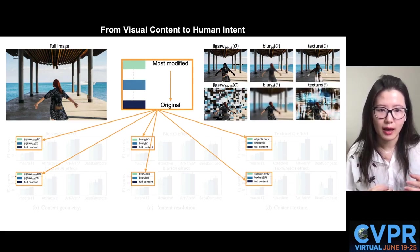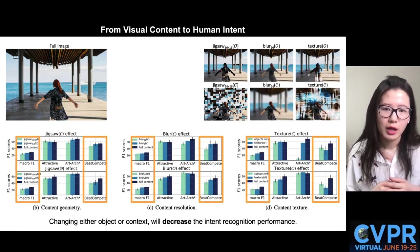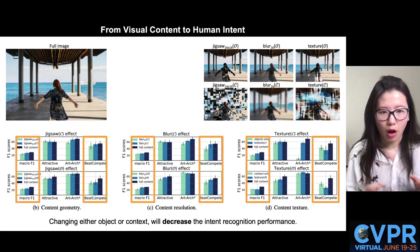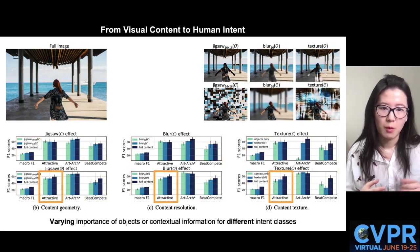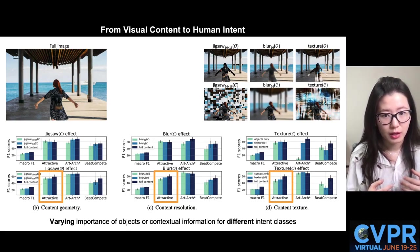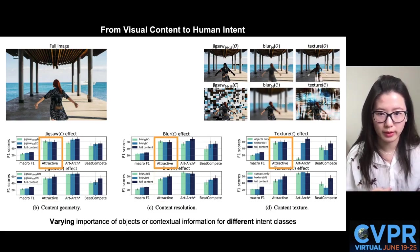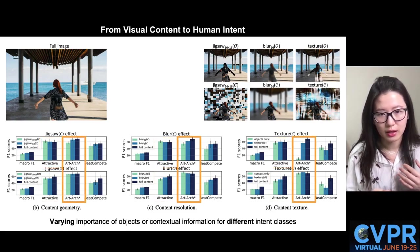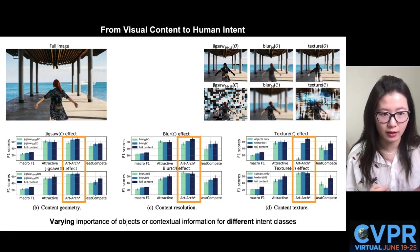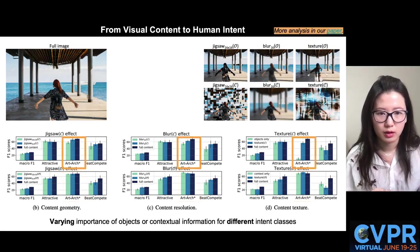The colors indicate how much we adjust the image. The first observation is that, in general, changing either object or context will decrease the intent recognition performance. But the impact of content properties is different for different classes. For example, the intent 'attractive' is more sensitive to object manipulation, but not so much to context manipulation. Intents like 'appreciating architecture,' on the other hand, have an opposite trend — more robust to object manipulation, yet sensitive to context modulation overall.